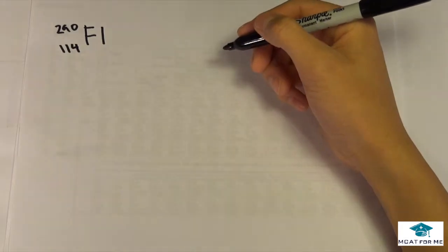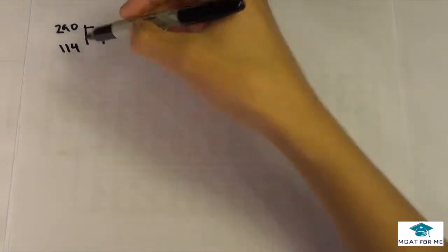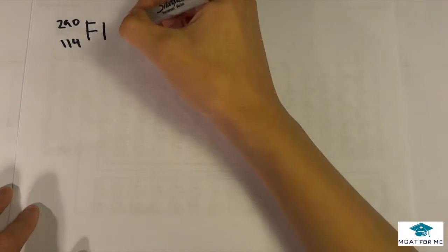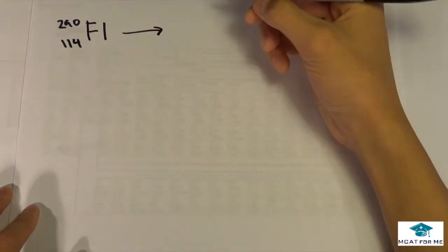And that 290 was given because it could be anything. It doesn't necessarily have to be what it says on the periodic table because there's many different isotopes of that same molecule. So they gave it a mass number of 290 and we know it's 114.